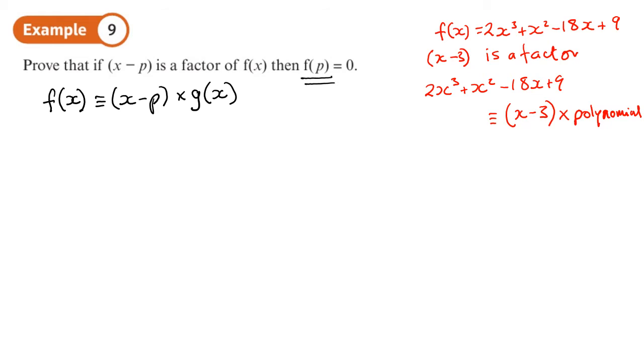Now we want to work out what f(p) is. So f(p) would be replacing x with p. So f(p) equals, whatever we've got, we put p there: p minus p times by g(p). That bit in the bracket is zero, isn't it? So we don't care what the other bit is, we're going to get zero. P minus p is zero.